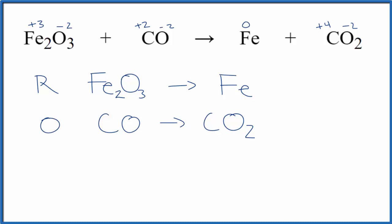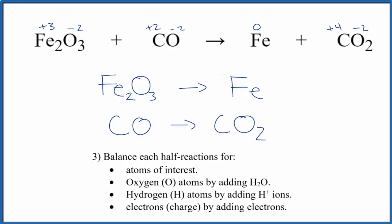We have our half reactions. At this point, we can do step 3. Here we're going to balance the half reactions. First, we'll balance the atoms of interest, the ones that have changed. Two irons here, just one here, let's put a 2. And carbon to carbon, we're done.